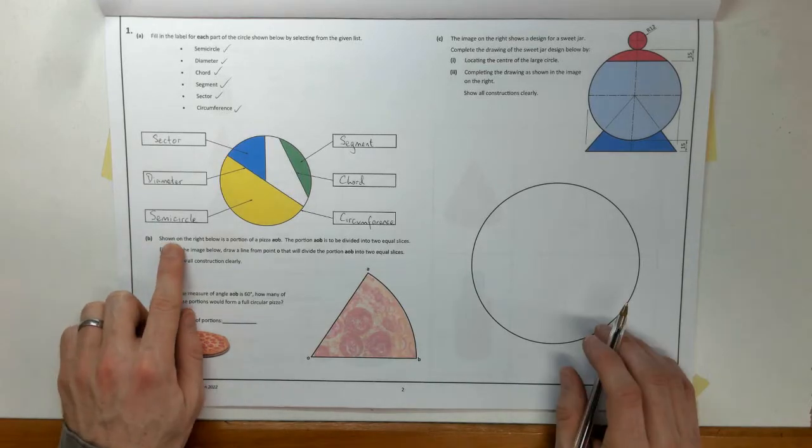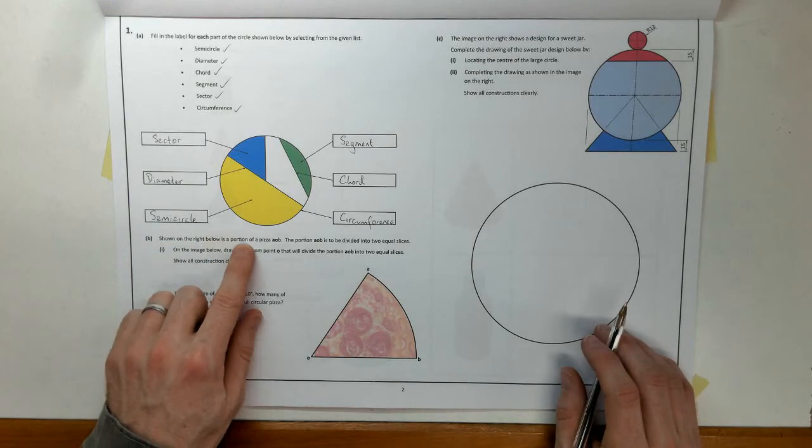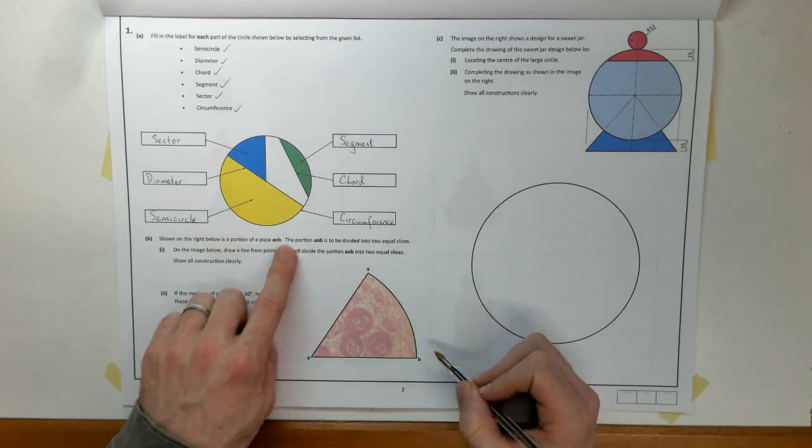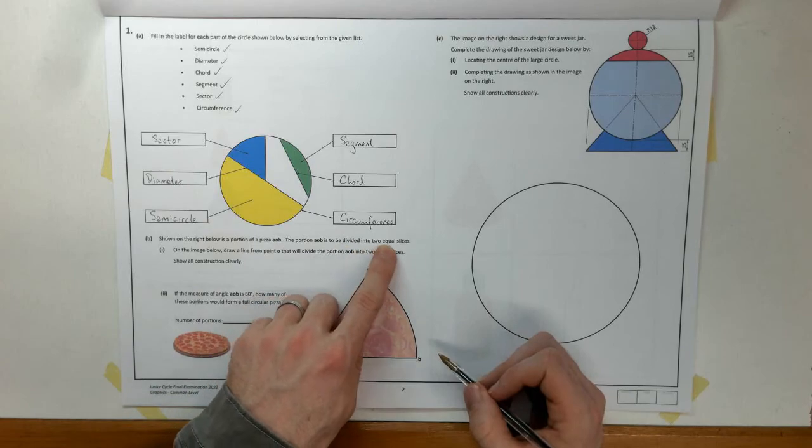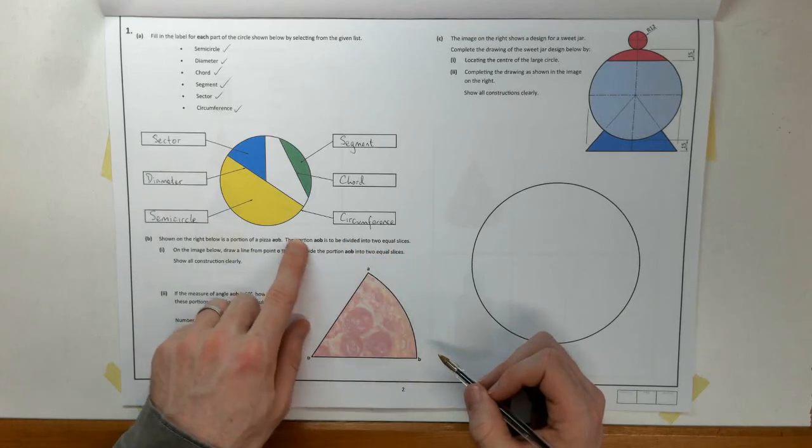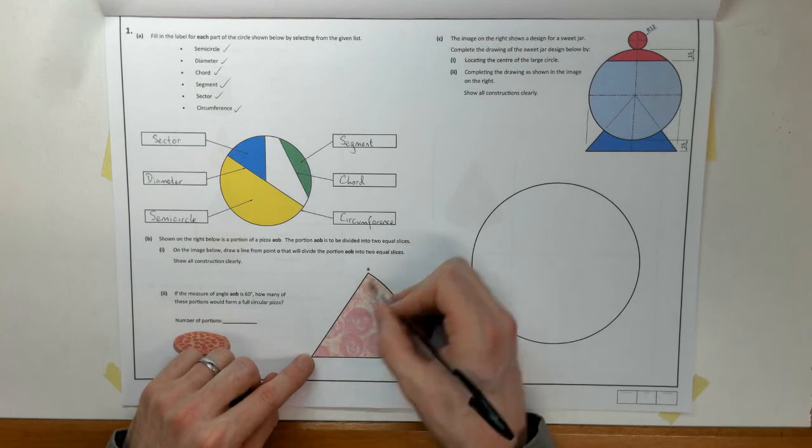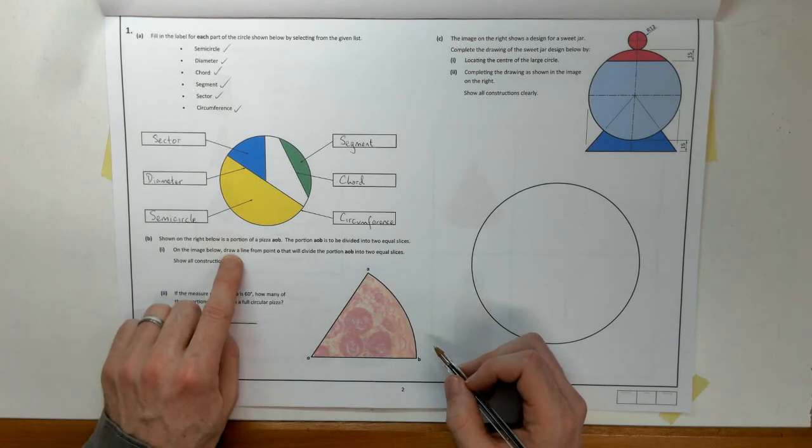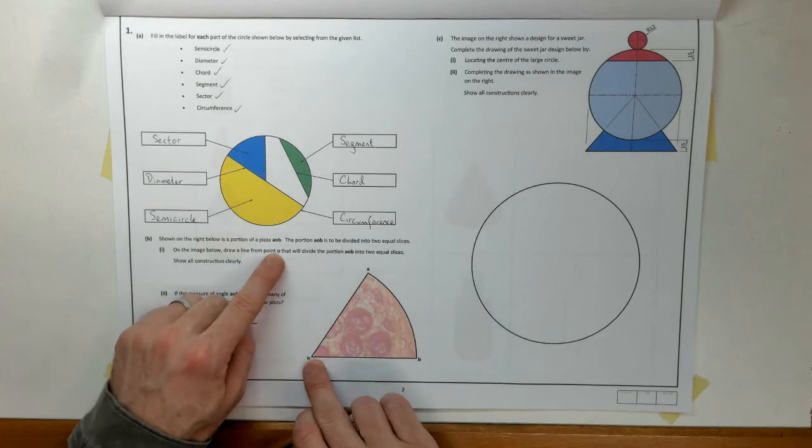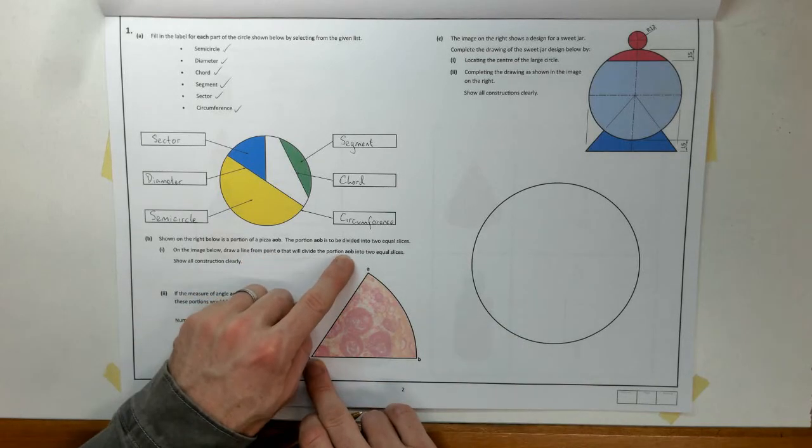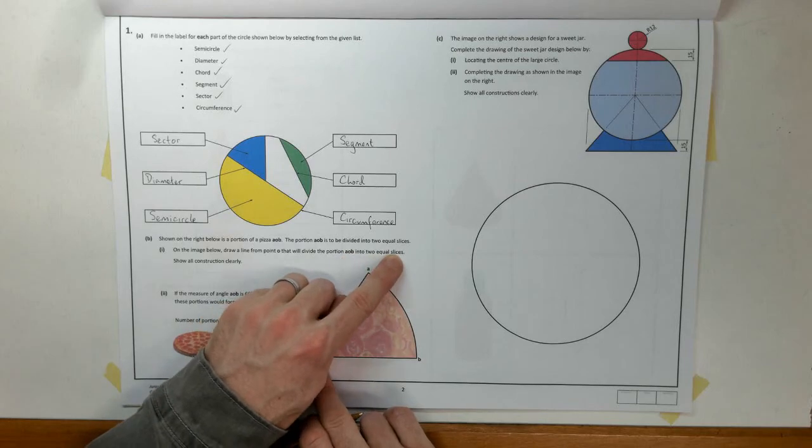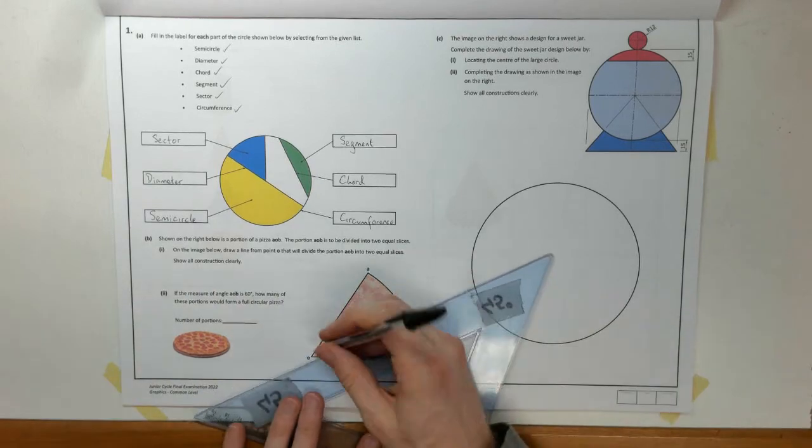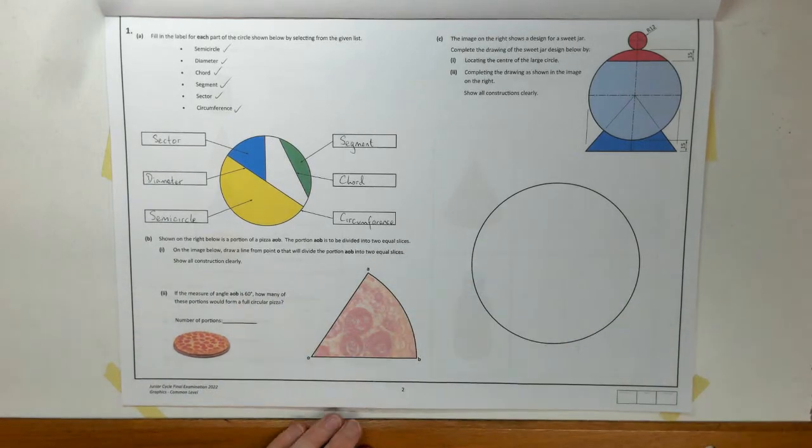Part B. Shown on the right below is a portion of a pizza A, O, B. The portion A, O, B is divided into two equal slices. Part One. On image below, draw a line from point O that will divide portion A, O, B into two equal slices. And show all our constructions. So I can't just come along, draw a line here. I need to show a construction for that.